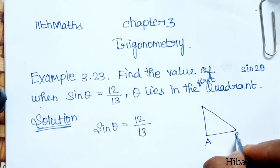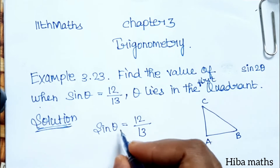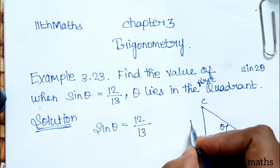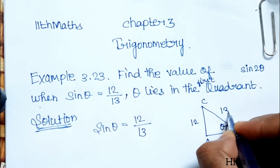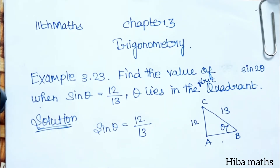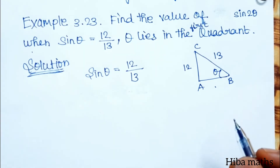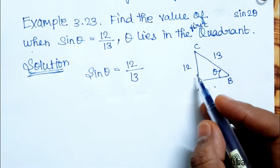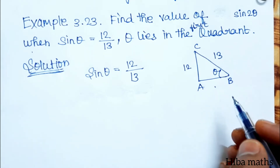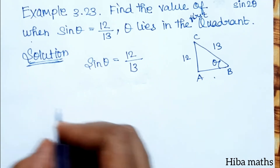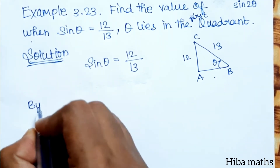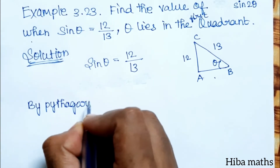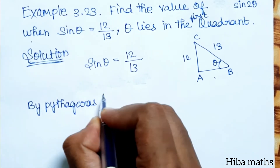Labeling the triangle sides a, b, c: the opposite side corresponds to sin θ, the hypotenuse is 13. We need to find the adjacent side. By the Pythagorean theorem: hypotenuse² = opposite² + adjacent².